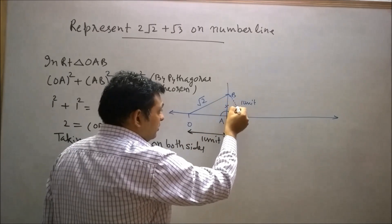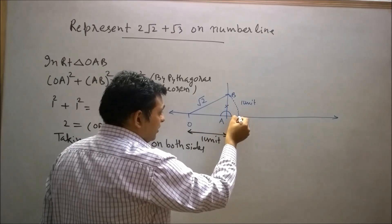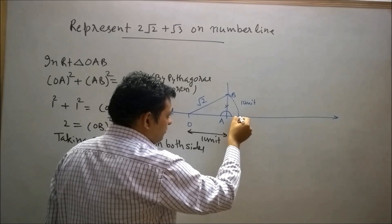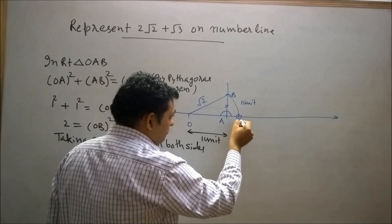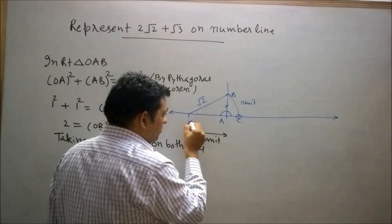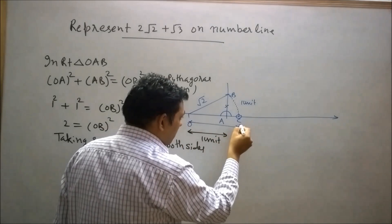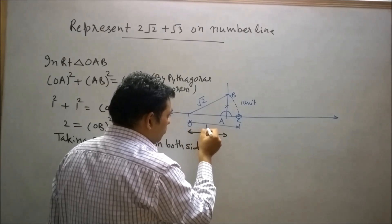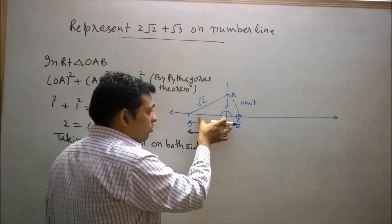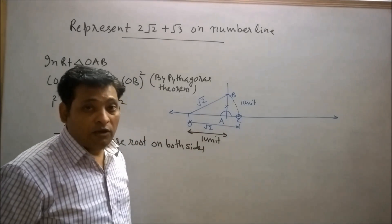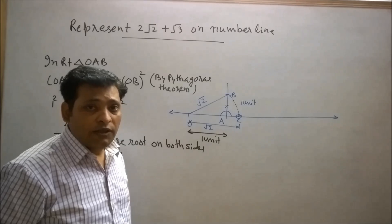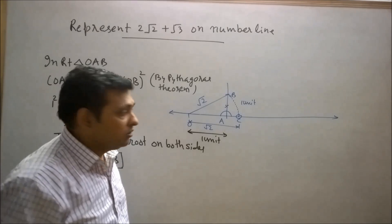Now draw an arc with radius OB centered at O. This arc will intersect the number line at point C, so OC will represent √2. Since OC and OB are the radii of the same circle, and radii of the same circle are always equal.